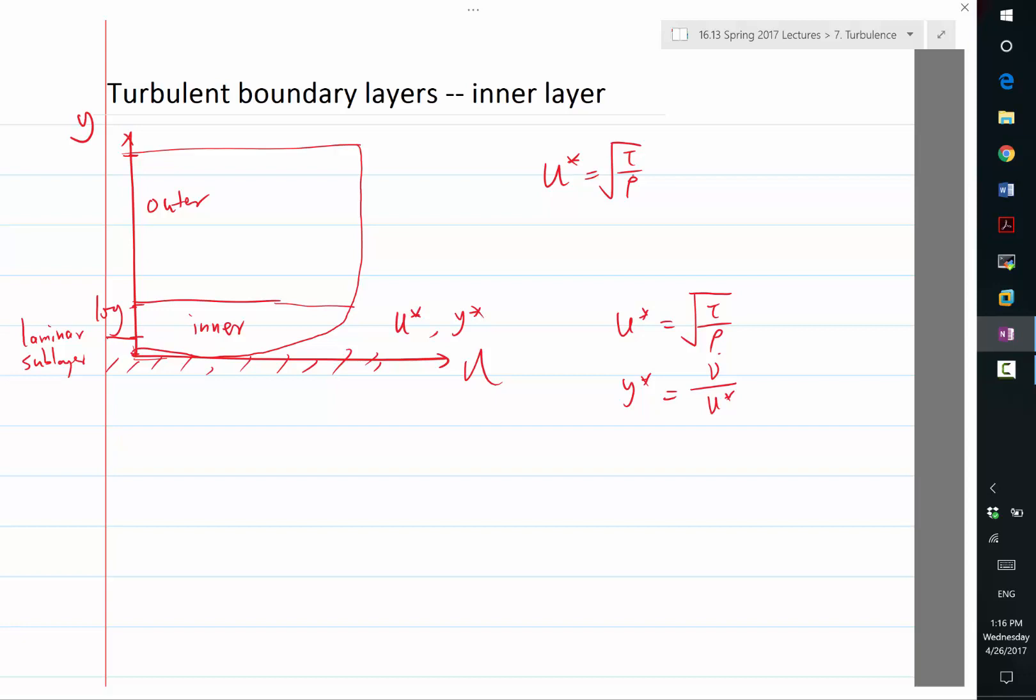Therefore, the mean profile won't change. The length scale is the thickness of the boundary layer. This is a high Reynolds number assumption because only for infinite Reynolds number is the total thickness of the boundary layer occupied completely by the outer layer. The inner layer becomes an infinitesimal portion of the entire boundary layer at the extreme of infinite Reynolds number.